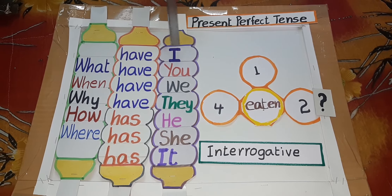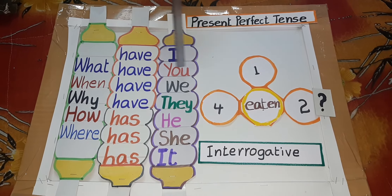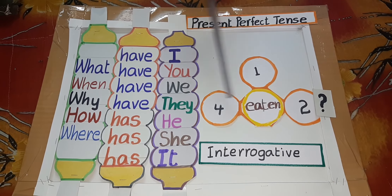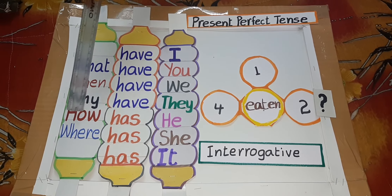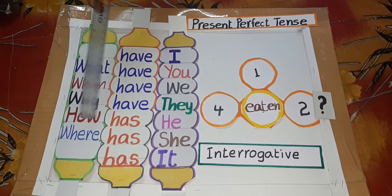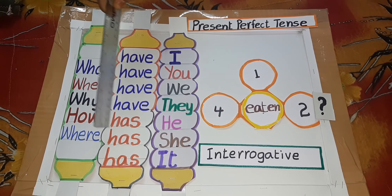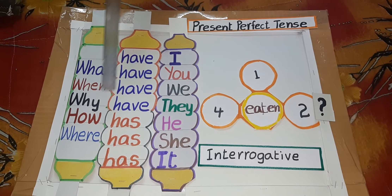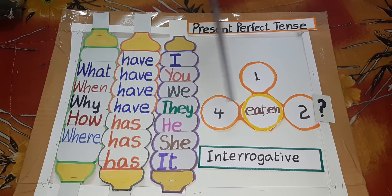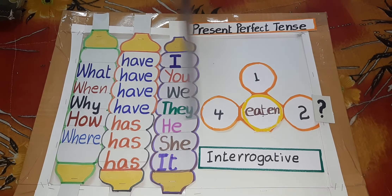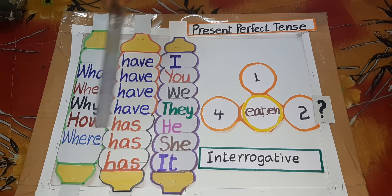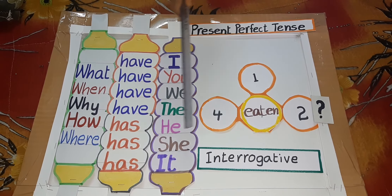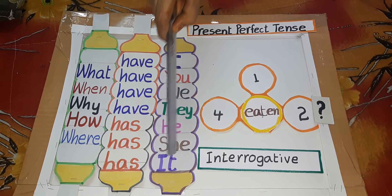How have I eaten? How have you eaten? How have we eaten? How have they eaten? How has he eaten? How has she eaten? How has it eaten? Where have I eaten? Where have you eaten? Where have we eaten? Where have they eaten? Where has he eaten? Where has she eaten? Where has it eaten?